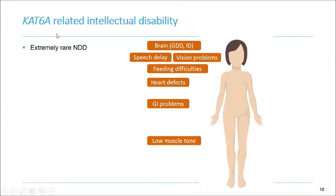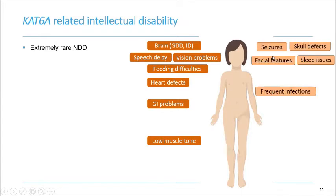I've put a slide for a quick introduction about KAT6A-related intellectual disability. This is an extremely rare neurodevelopmental disorder, with up to about 311 individuals confirmed to have a genetic diagnosis of KAT6A at the moment. Some of the very common clinical features observed in affected individuals include gross developmental delay, intellectual disability, speech delay, vision problems, feeding difficulties, heart defects, gastro problems, and low muscle tone. Affected individuals also often exhibit seizures, skull defects, dysmorphic facial features, sleep problems, and frequent infections.